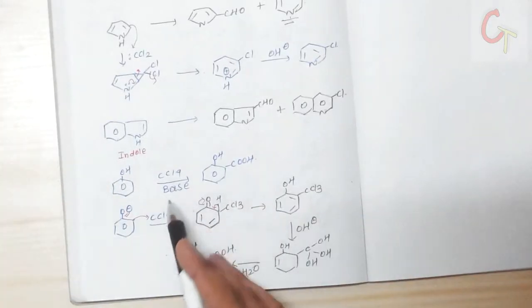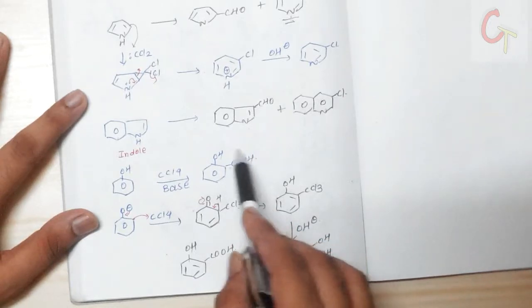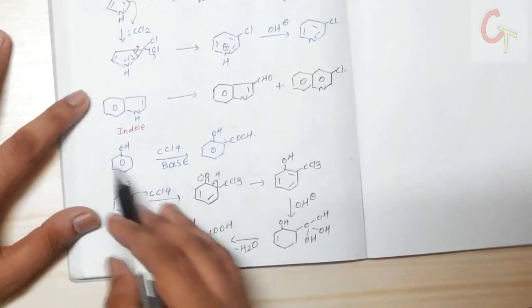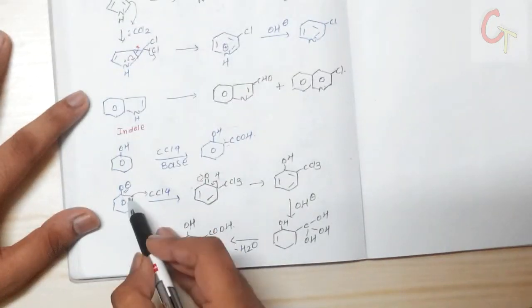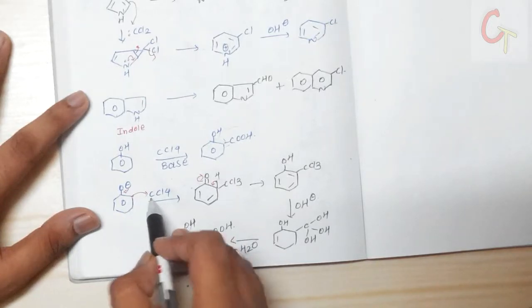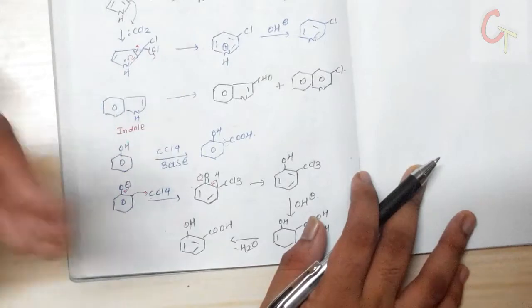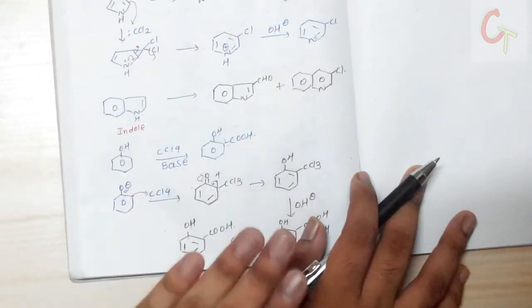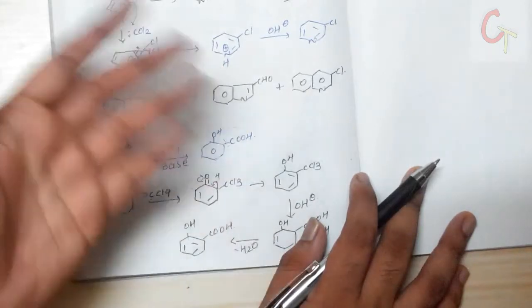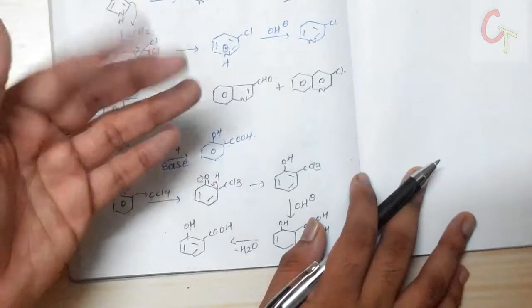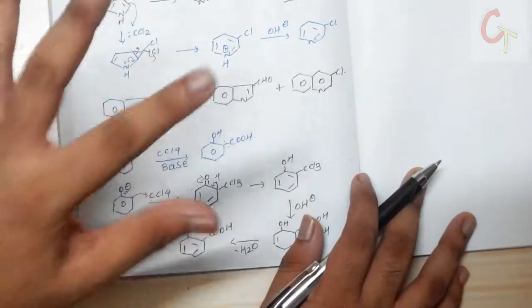When phenol is treated with tetrachlorocarbon (CCl₄) in the presence of base — similar to Reimer-Tiemann conditions — formylation does not take place. Instead, carboxylation occurs at the ortho position. The mechanism follows mostly the Reimer-Tiemann pathway, but in presence of chloroform we get an aldehyde (salicylaldehyde), whereas in presence of CCl₄ we get a carboxylic acid at the ortho position.